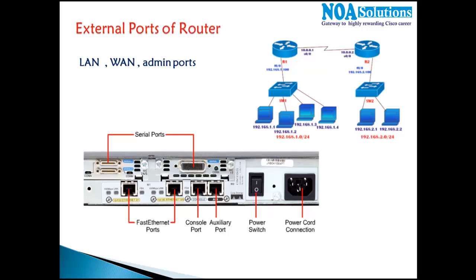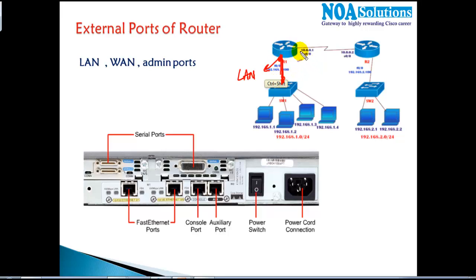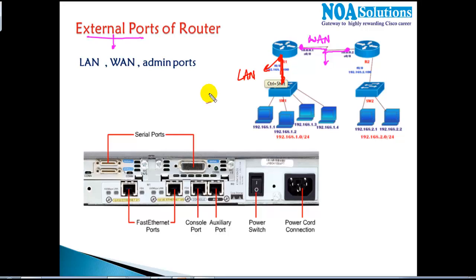The LAN port is the port that connects to your switch — we call this a LAN port. The port that connects to your WAN or wide area network, connecting to the remote location, we call a WAN port. We'll cover WAN connectivity in more detail in our next sections, but here we'll understand the different kinds of ports you'll find on any router generally.